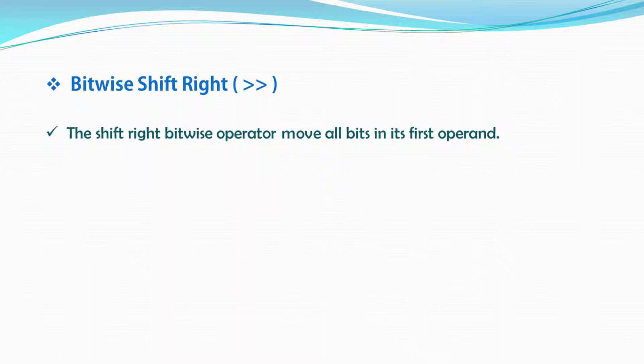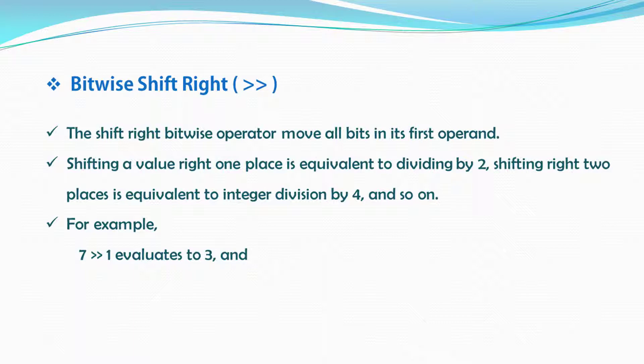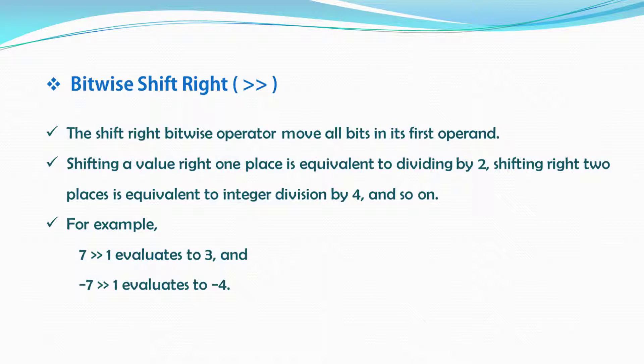The next operator is shift right. The shift right bitwise operator moves all bits in its first operand. Shifting a value right one place is equivalent to dividing by two, shifting right two places is equivalent to integer division by four, and so on. For example, seven shift right one, when you execute this statement, it evaluates to three. And if we say minus seven right shift one, then it evaluates to minus four.